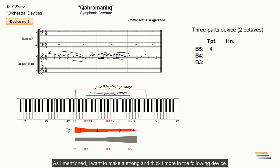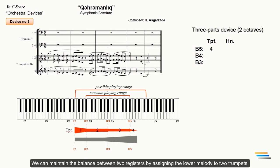As I mentioned, I want to make a strong and thick timbre in the following device. So, I have to double either B5 or B4, as I have two free trumpets. So, the question is, which register to double in unison? As you can see, the melody starting with B4 is placed in the second register of the trumpet. This register has medium power and is not as strong as the third register. We can maintain the balance between two registers by assigning the lower melody to two trumpets. It is not necessary to do this, but I want to strengthen the weak register against the strong one. Thus, this register can be indicated with the number 4 since it has gained power.